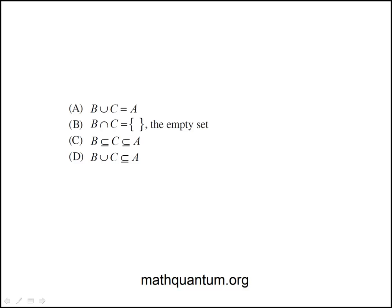Here we're told that A is a non-empty set and both B and C are subsets of A. Question: which of the following statements must be true?